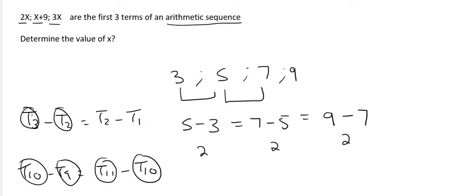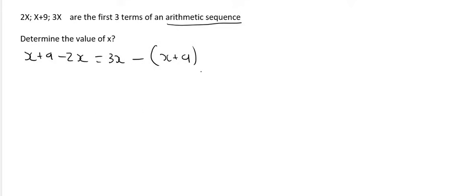For example we could say that x plus 9 minus the term on the left which is 2x will be the same as 3x minus the term on the left which is x plus 9. But now because that x plus 9 is two terms you would want to put it in a bracket like that. And then you can solve. What we're doing here is we're manipulating the fact that the differences in an arithmetic pattern have to stay the same.